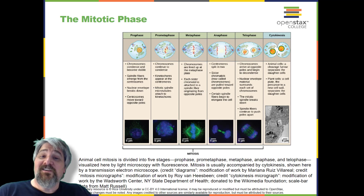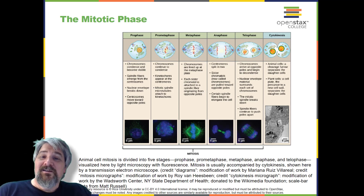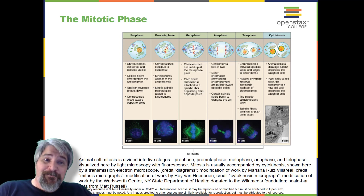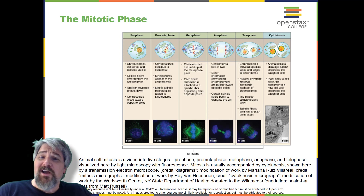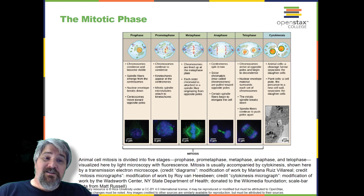During telophase, all of the events that set up the duplicated chromosomes for mitosis during the first three phases are reversed. The chromosomes reach the opposite poles and begin to decondense or unravel. The mitotic spindles are broken down into monomers that will be used to assemble cytoskeleton components for each daughter cell. Nuclear envelopes form around the chromosomes.